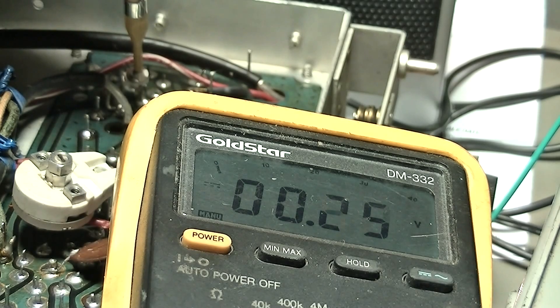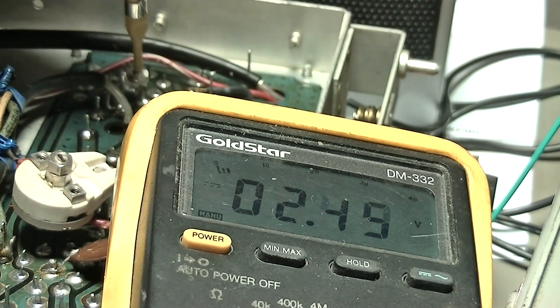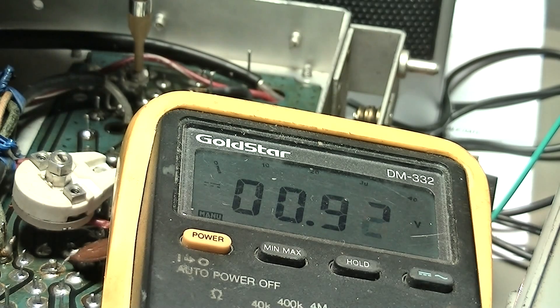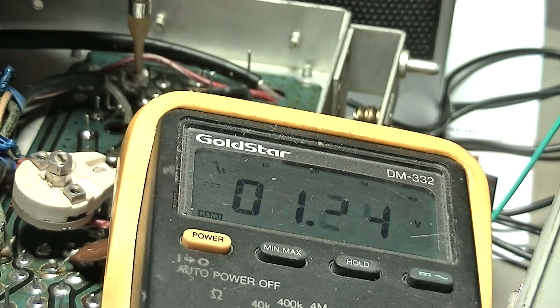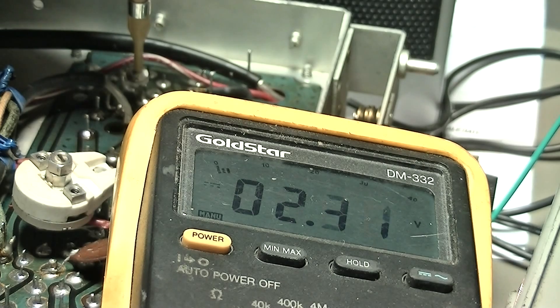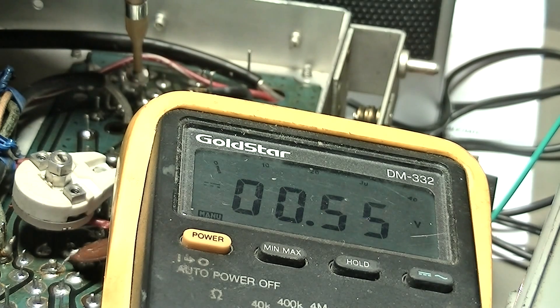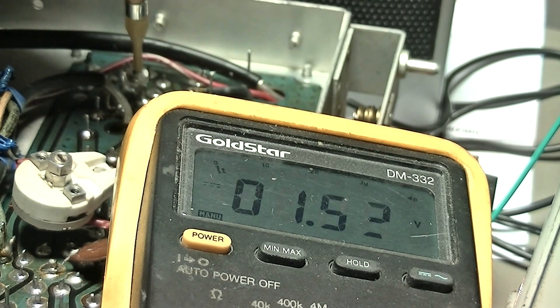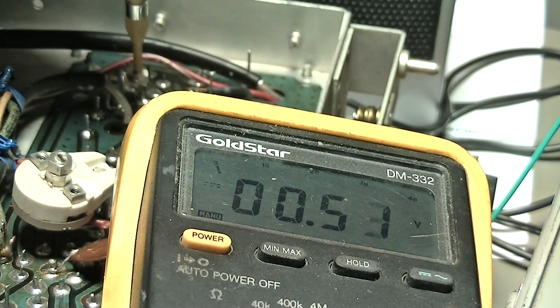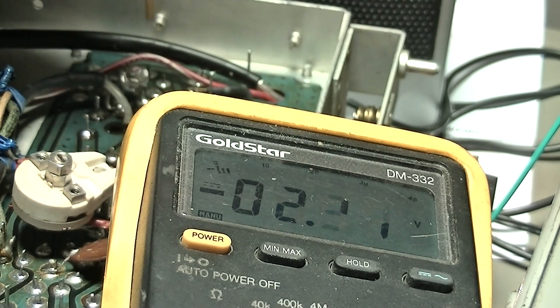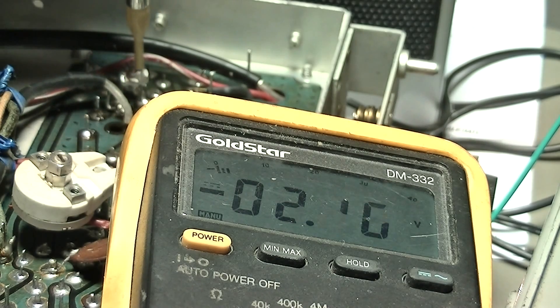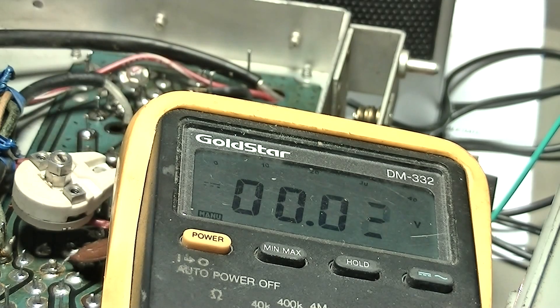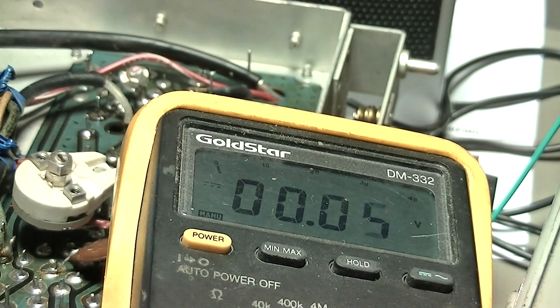It should start to drop back down there. It's dropping back down. And there it went positive. And then if I go the other way, it'll go positive the same amount. So what I want to do is I want to zero this. Man, is that a touchy adjustment. I'm going to have to just get close with this. And then I'm going to have to try different capacitors in there.